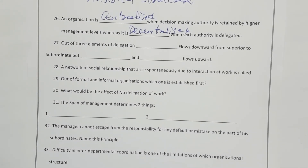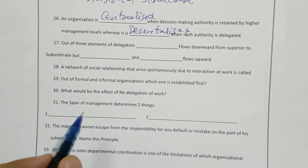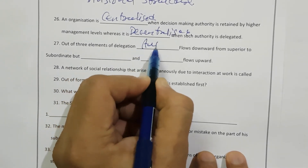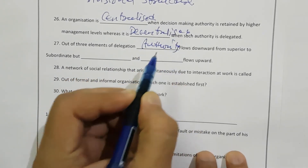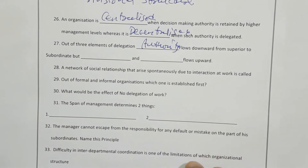Out of the three elements of delegation, authority flows downward from superior to subordinate, but responsibility and accountability flow upward. They are talking about the three main concepts of this chapter — authority flows downwards from superior to subordinate.